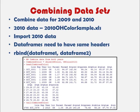Our soil cap dataset had data for two years, and the data for those two years was in separate files. So we need to combine those two datasets, and we can do this very easily using R. The name of our 2010 dataset is 2010OHColorSample.xls. We would import that into R the same way that we did for our 2009 data, and now we're ready to combine our data frames.